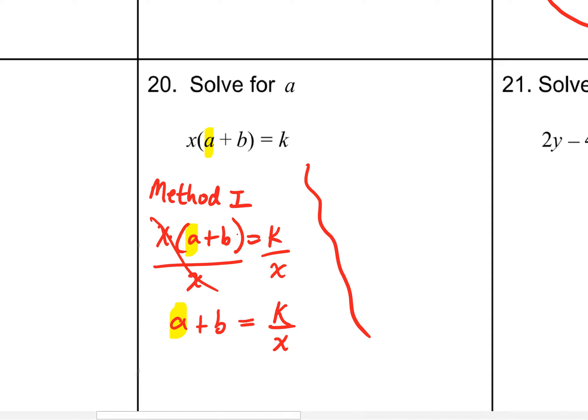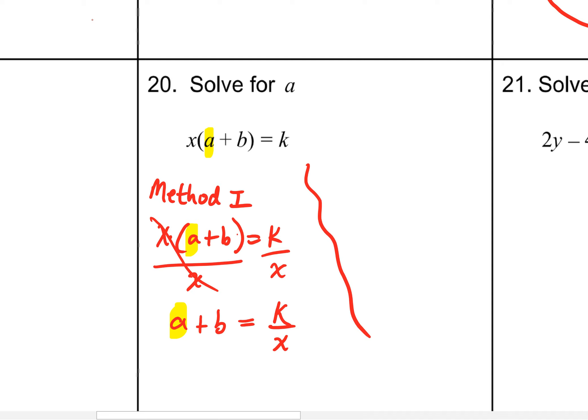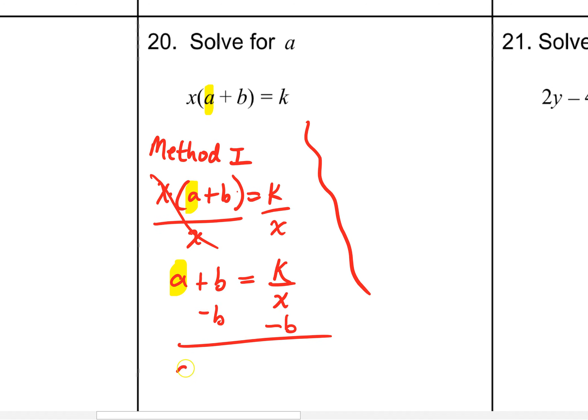You can see you've got a plus b equals k over x. But your a is not alone, is it? You can see that you want to get rid of that b. That's a plus b, so you could minus a b right here. And your final answer would be k over x subtract a b. That can look rather weird, but that is, in fact, what you have.